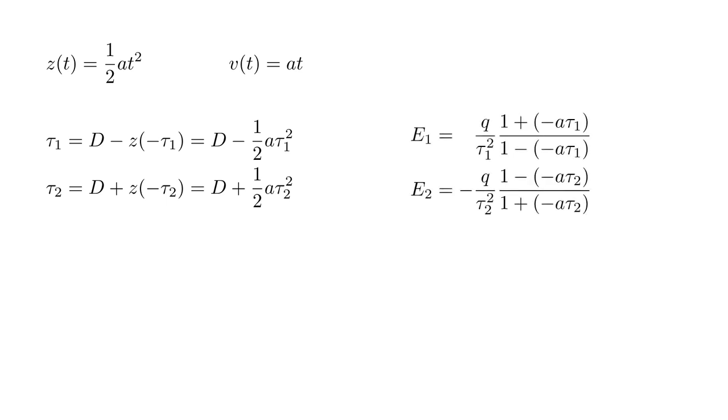And our electric field expressions are E-one equals Q over tau-one squared times one minus A tau-one over one plus A tau-one, and E-two equals minus Q over tau-two squared times one minus A tau-two over one plus A tau-two.